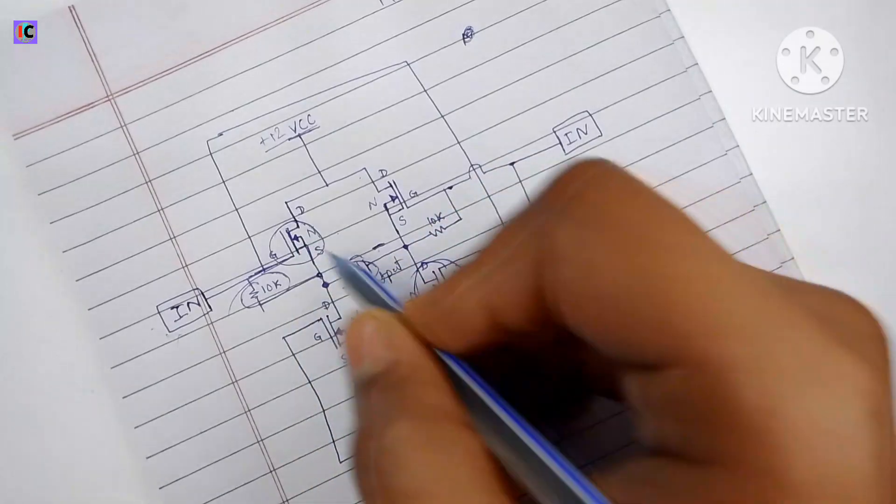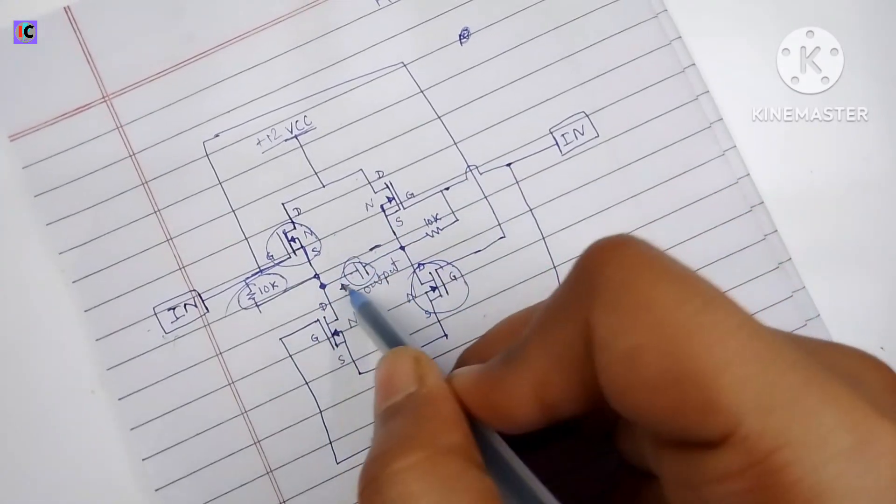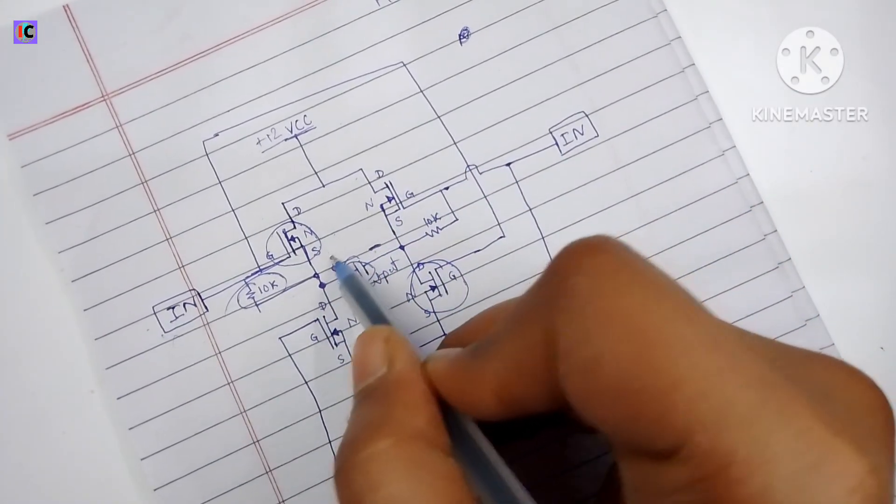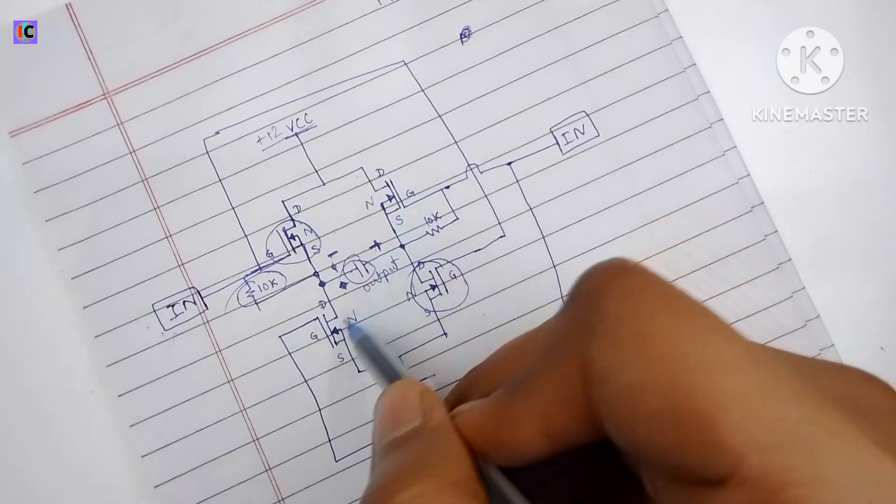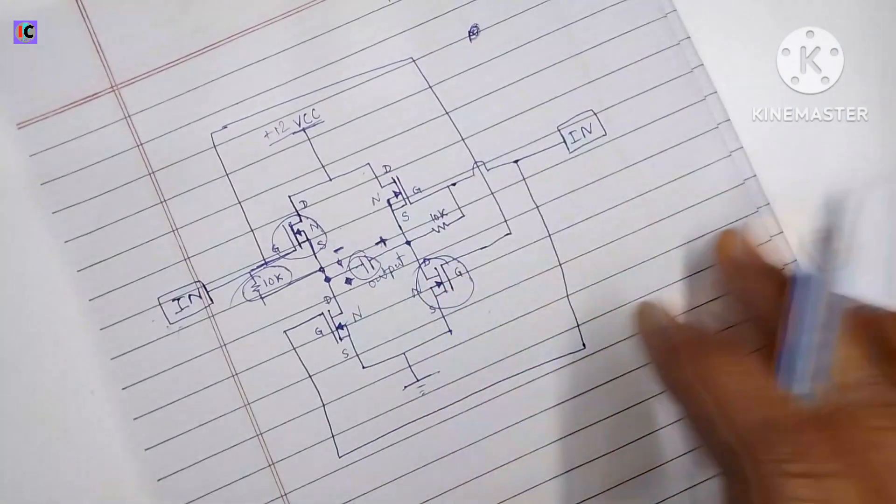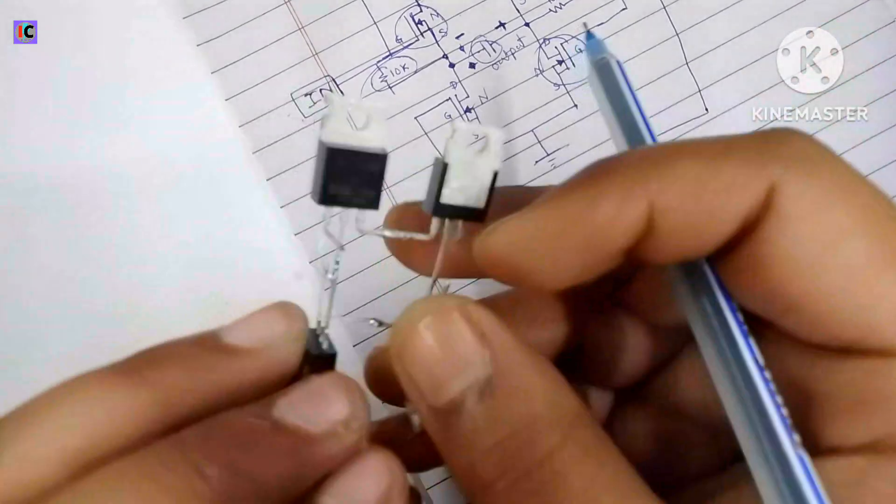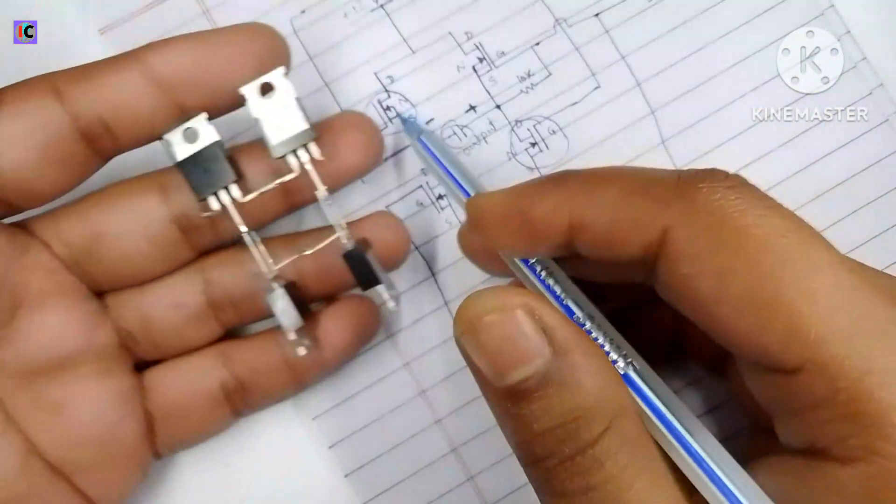When we see the upper side of the MOSFET with a negative and positive signal, we need to turn on the MOSFETs in the diagonal position.